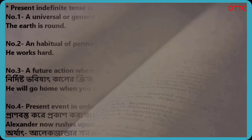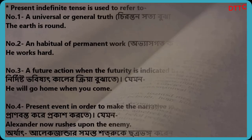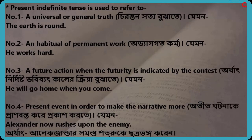Present indefinite tense is used to refer to: Number 1 — a universal or general truth. For example: The earth is round. Number 2 — a habitual or permanent action. For example: He works hard.